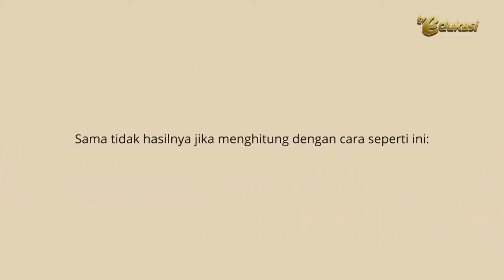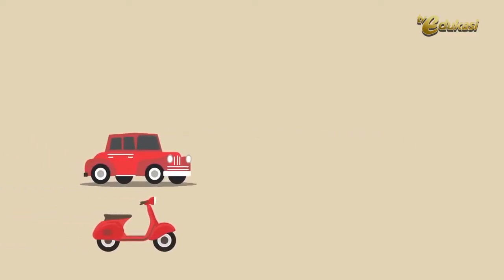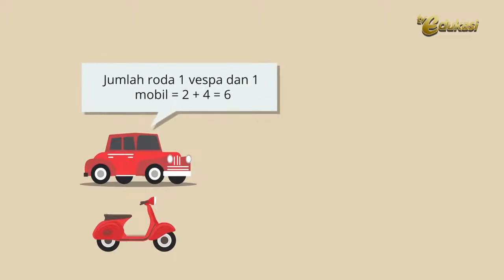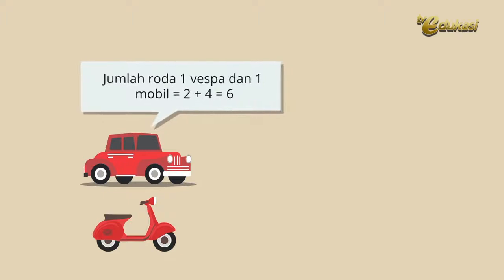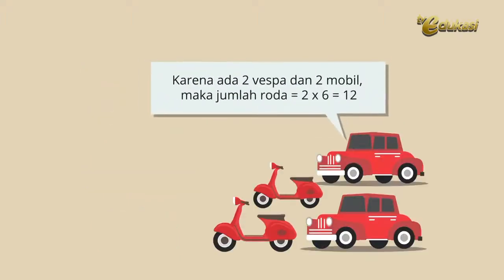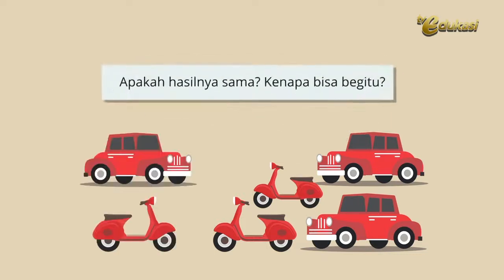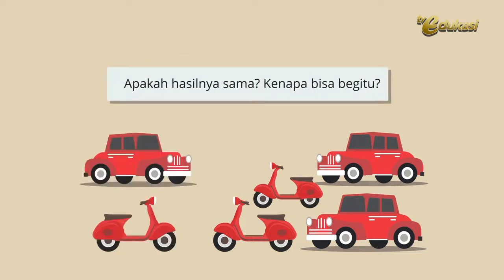Sama tidak hasilnya jika menghitung dengan cara seperti ini? Jumlah roda 1 Vespa dan 1 mobil sama dengan 2 ditambah 4 sama dengan 6. Karena ada dua Vespa dan mobil, maka jumlah roda sama dengan 2 dikali 6 sama dengan 12. Apakah hasilnya sama? Kenapa bisa begitu?